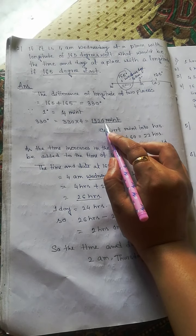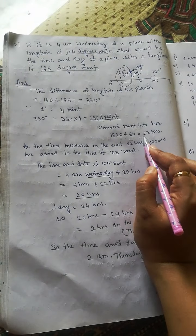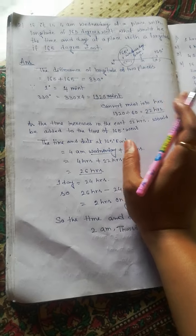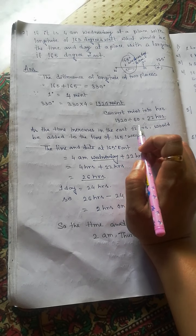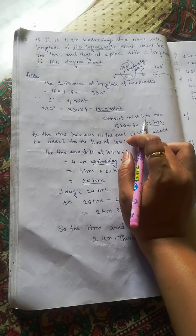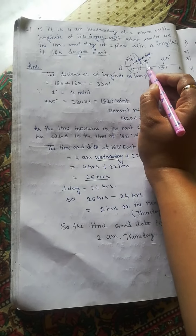...equals to the answer is 22 hours. Okay, so as you know the time increases in the East, 22 hours would be added to the time of 165 degrees West. You already know the time is 4 AM Wednesday.